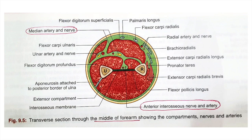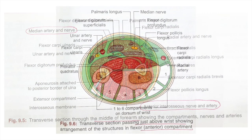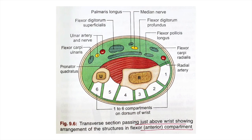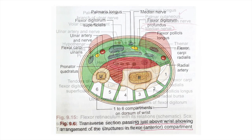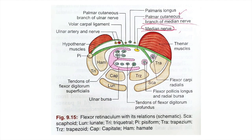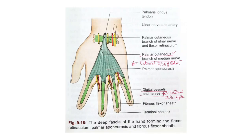The deep muscles of the front of the forearm are actually innervated by the anterior interosseous nerve, which is a deep, purely motor branch of the median nerve running deep over the interosseous membrane. When the median nerve reaches the carpal tunnel, it gives a palmar cutaneous branch innervating the skin over the lateral two-thirds of the palm.